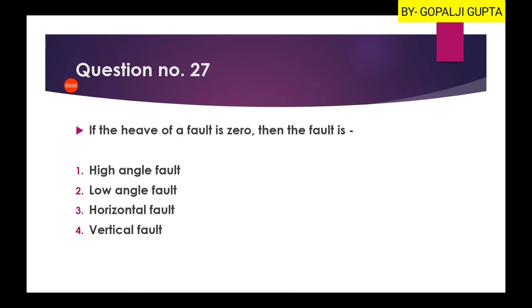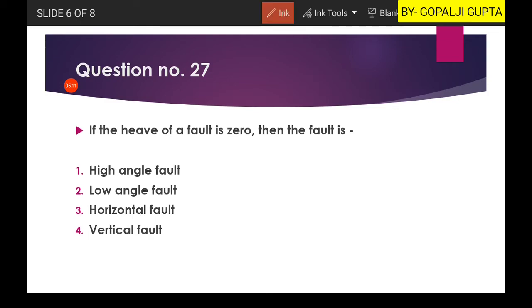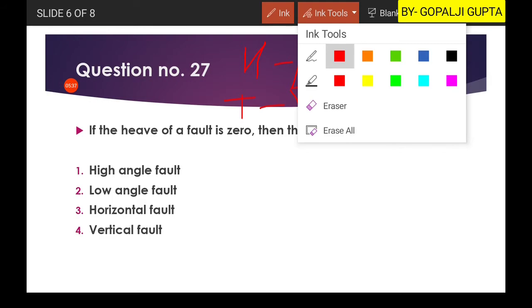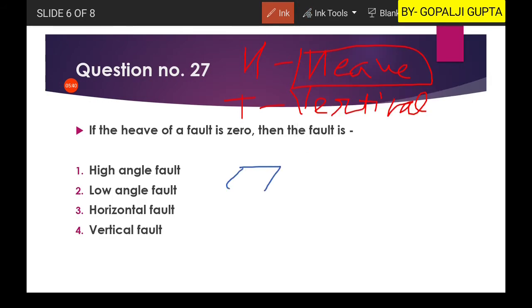Next question: if heave of a fault is zero, then what will be the name of that fault? You know there are two components. First one is heave - that is horizontal movement. And another is throw - that is vertical movement. So if you have zero for the heave, means you have only vertical movement. Then your fault will look something like this.